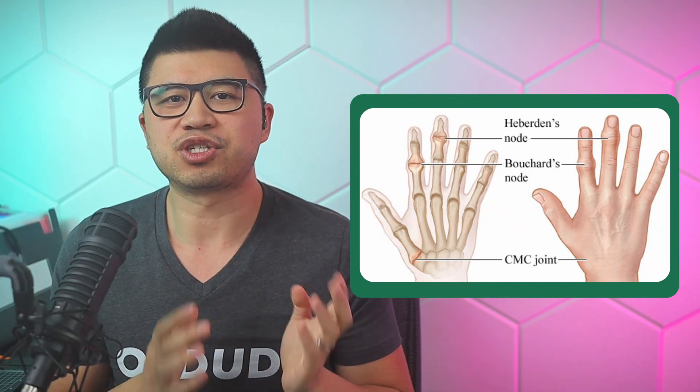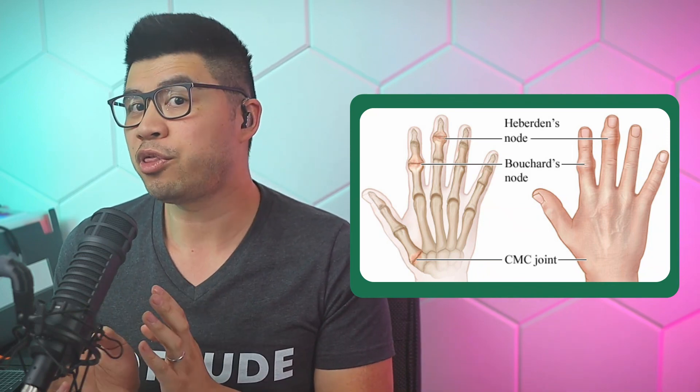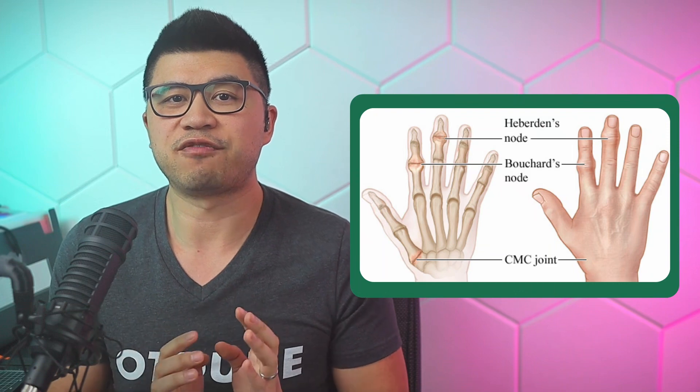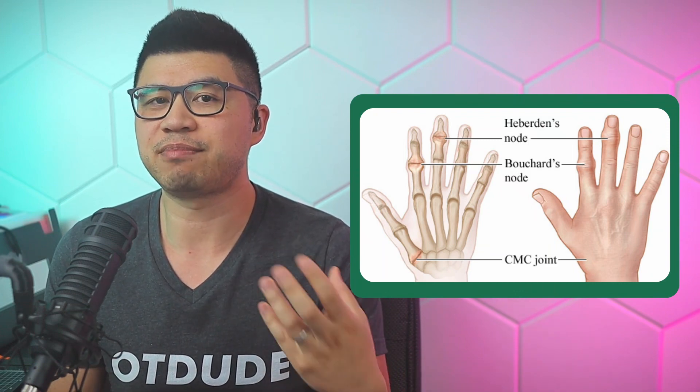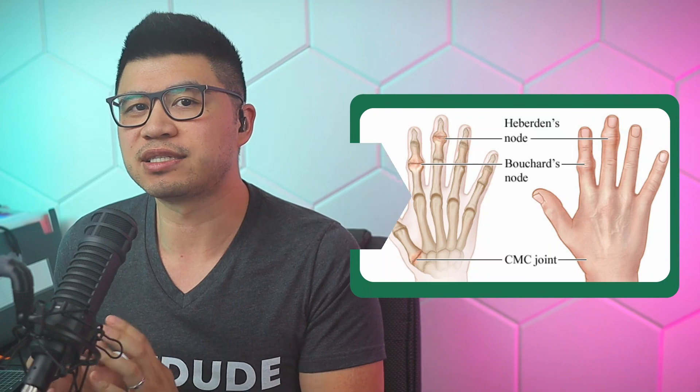So: Bouchard equals mouth, proximal to tongue — and the tongue being more distal corresponds to the DIP deformities of Heberden's nodes. The classification of OA is primary OA and secondary OA. Primary is related to bone involvement, and secondary is related to other factors such as genetics, trauma, and infections.